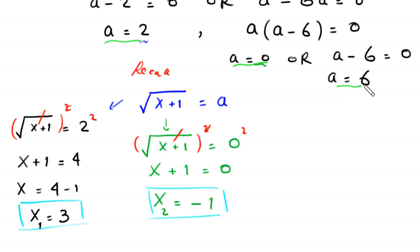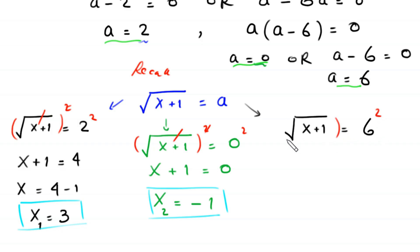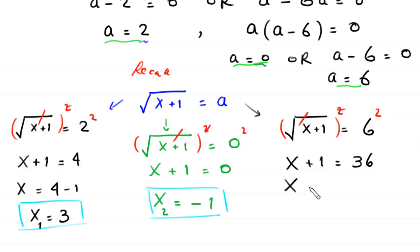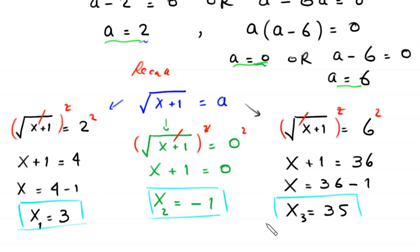When a is 6, square root of (x+1) equals 6. Squaring both sides: x plus 1 equals 36. Moving 1 to the right hand side: x equals 35. This is the third solution of this equation. So we have three solutions: x equals 3, x equals negative 1, and x equals 35.